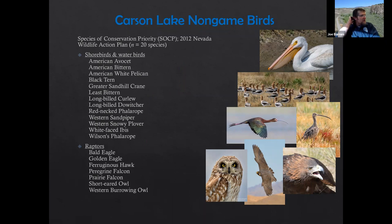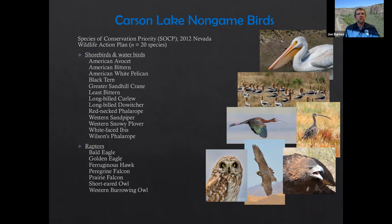I'm the statewide staff specialist for the Wildlife Diversity Division — we're the counterpart for the game division and the program covers everything non-game and terrestrial. I want to focus today on some avian species found at Carson Lake and Pasture, starting with the list of species of conservation priority that we have identified. That list doesn't necessarily indicate rarity or general threat levels, but it's from our 2012 State Wildlife Action Plan that highlights and prioritizes species for conservation and monitoring efforts.